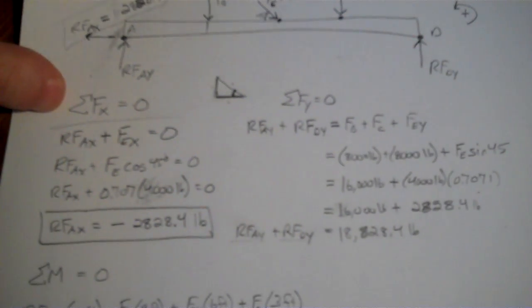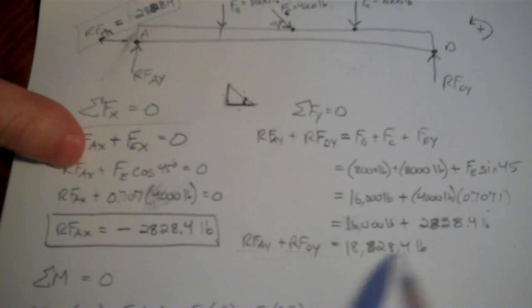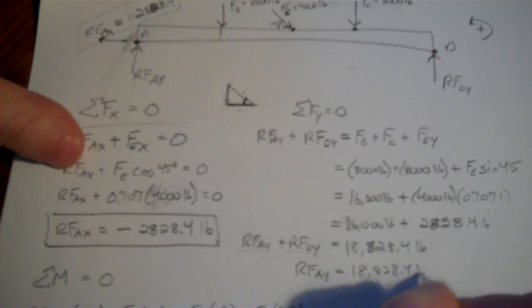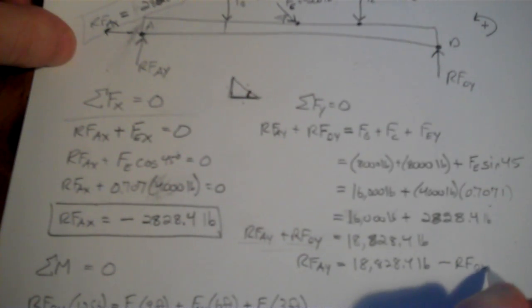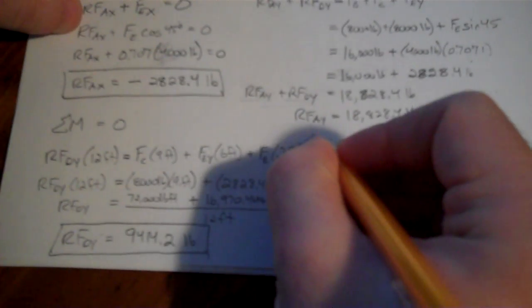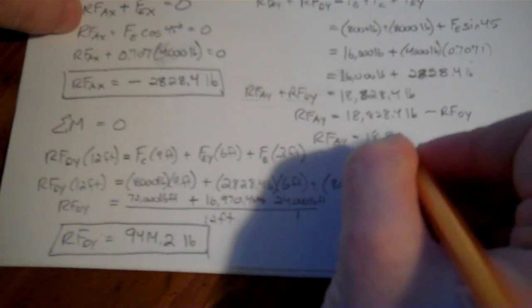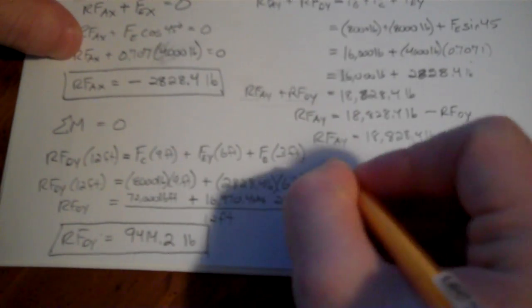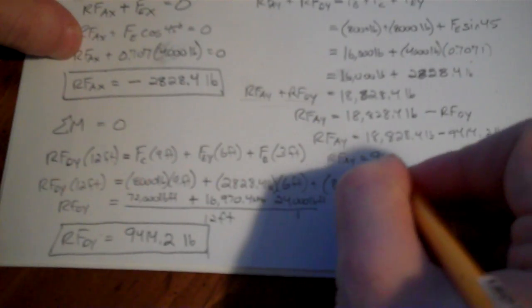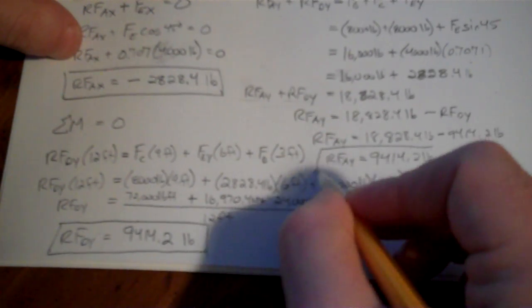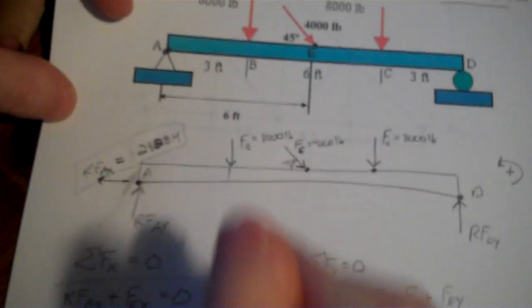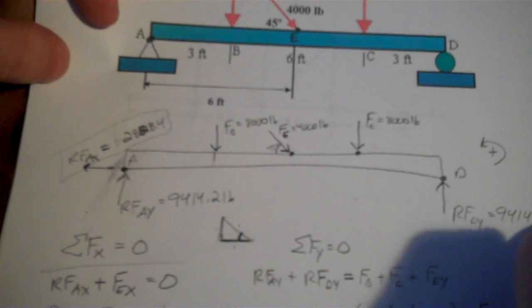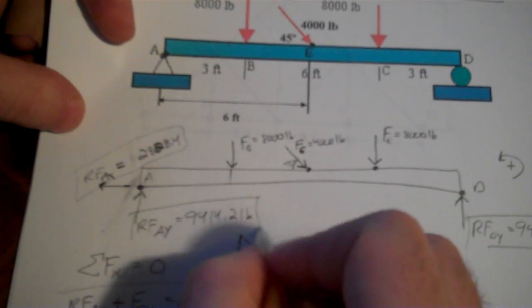All right, two out of three. I've got two reaction forces, and now I go back to my equation I had here, since I had both of them. And if I solve for RFAy, the only one left is 18,828.4 pounds minus RFDy, which we just found down here. So RFAy is equal to 18,828.4 pounds, minus 9414.2 pounds, which turns out to be half of that. So RFAy is also 9414.2 pounds. And now we've found each of the three reaction forces. Got our free body diagram. I'll plug in here, 9414.2 pounds, and 9414.2 pounds. Circle the answers. That's what we're looking for. And we're done.